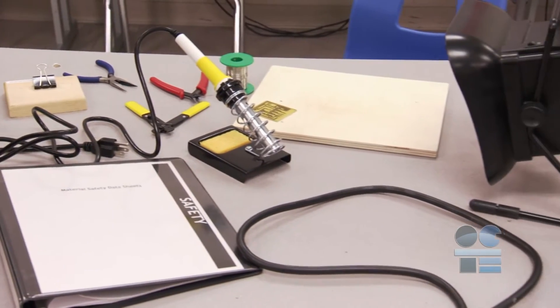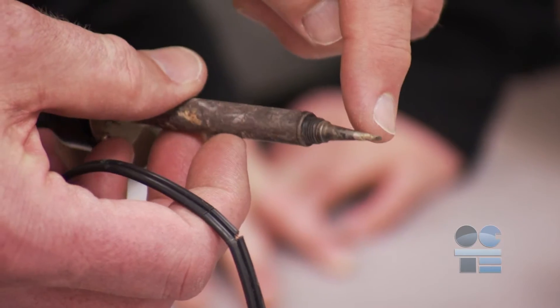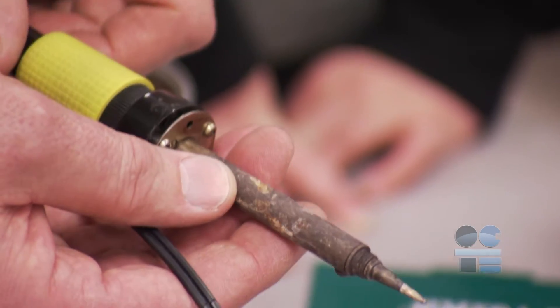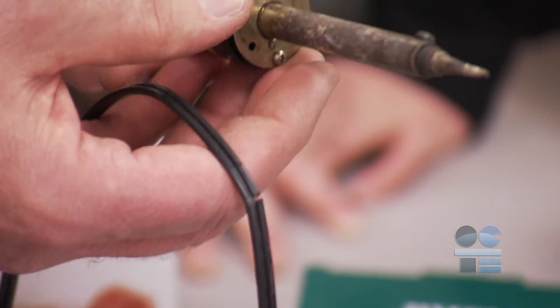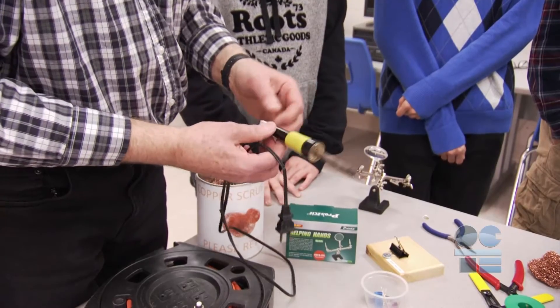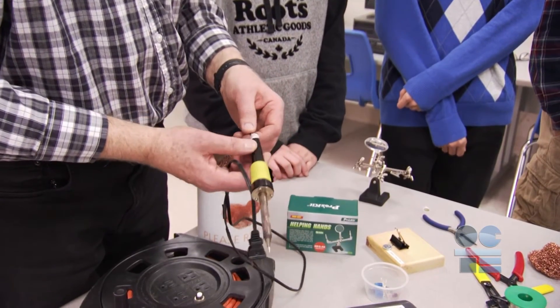Before we get started, let's inspect the soldering iron. We want to make sure that the tip of the iron is in good shape. Over time, it becomes corroded and breaks down because of the heat. If it isn't in good shape, your instructor can replace it.